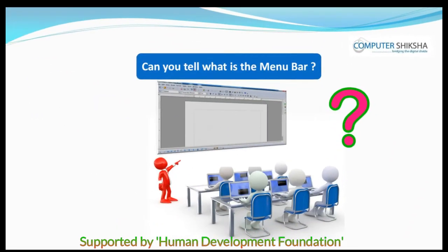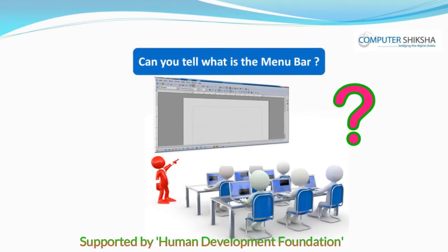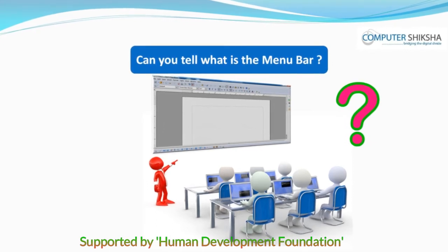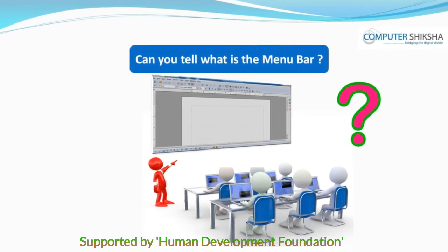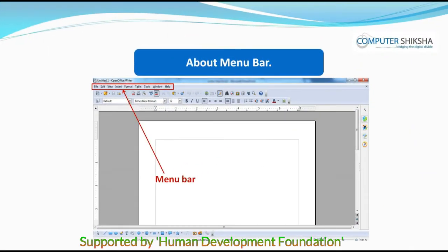Can you tell what is the Menu Bar? Menu Bar is the most important part of Writer. It is from here that we can do all our work related to the files, like formatting text, merging documents, or saving files, etc.